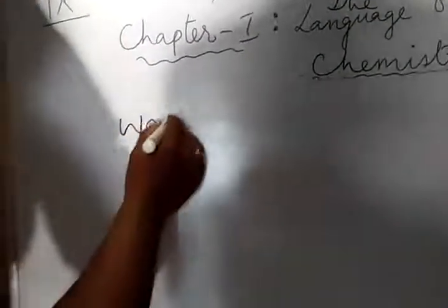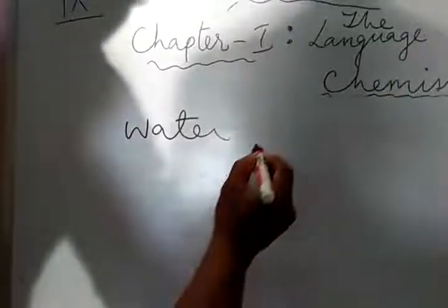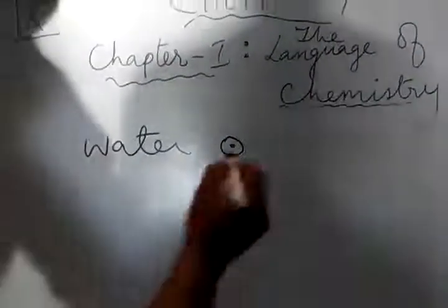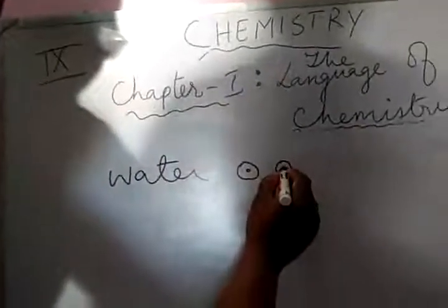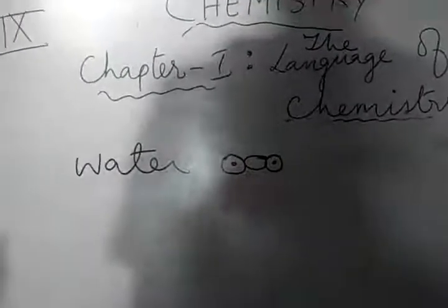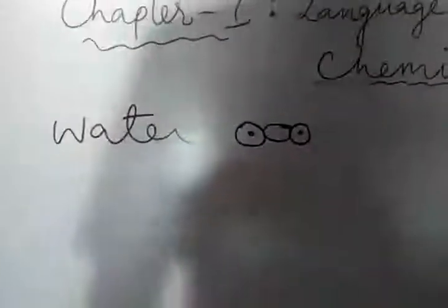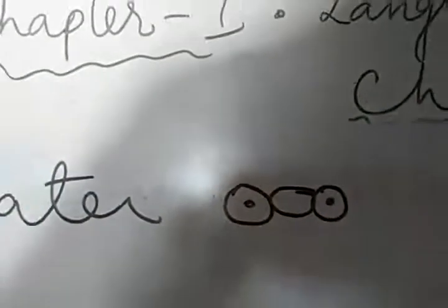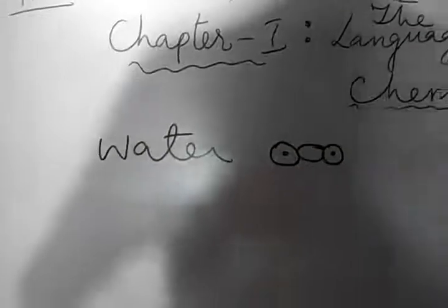For compounds and molecules — compound atoms — John Dalton also used grouped circles. For example, for water, he used a hydrogen symbol, then oxygen in between, then another hydrogen — two hydrogen atoms with oxygen in between. This is how Dalton represented water. So this is how John Dalton used these symbols.